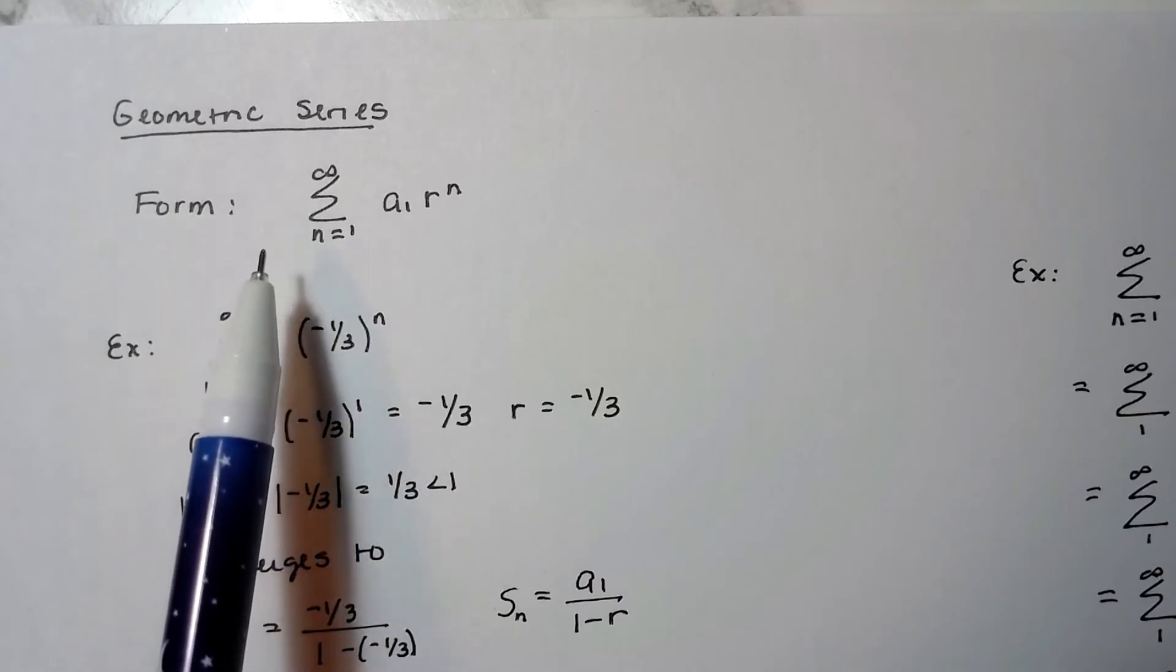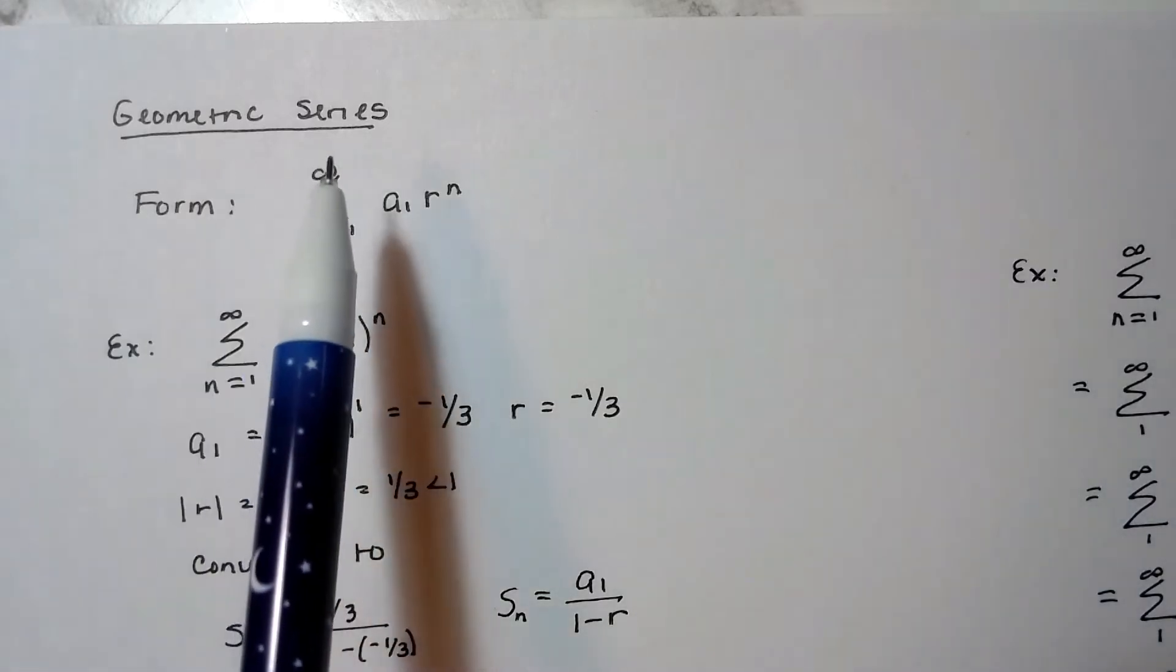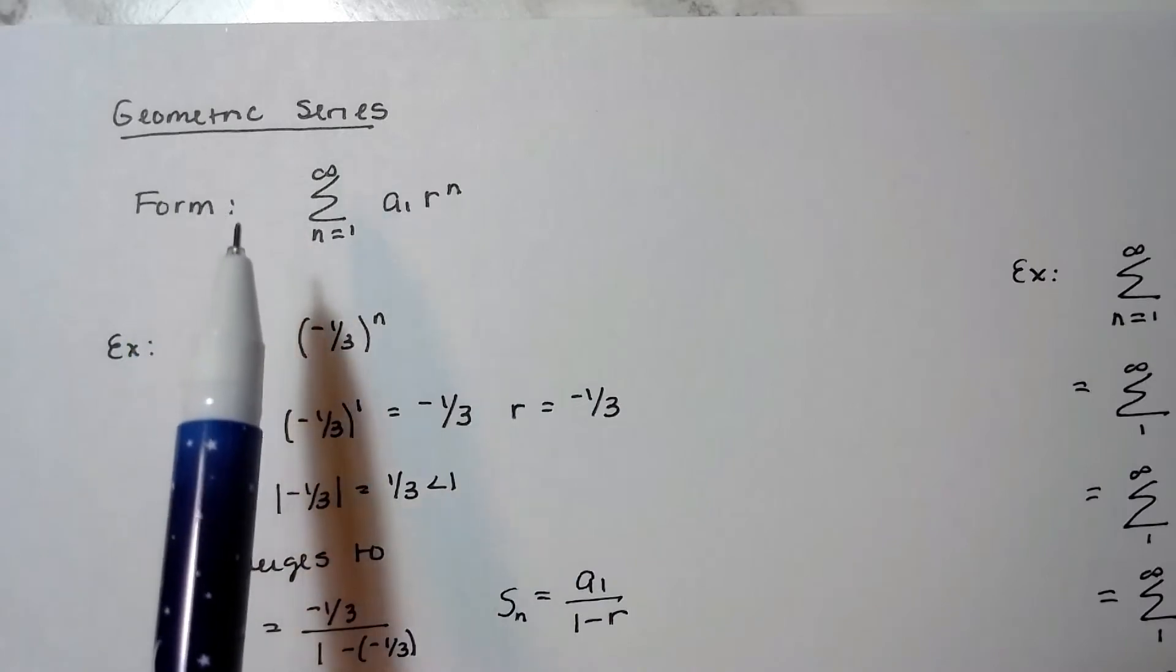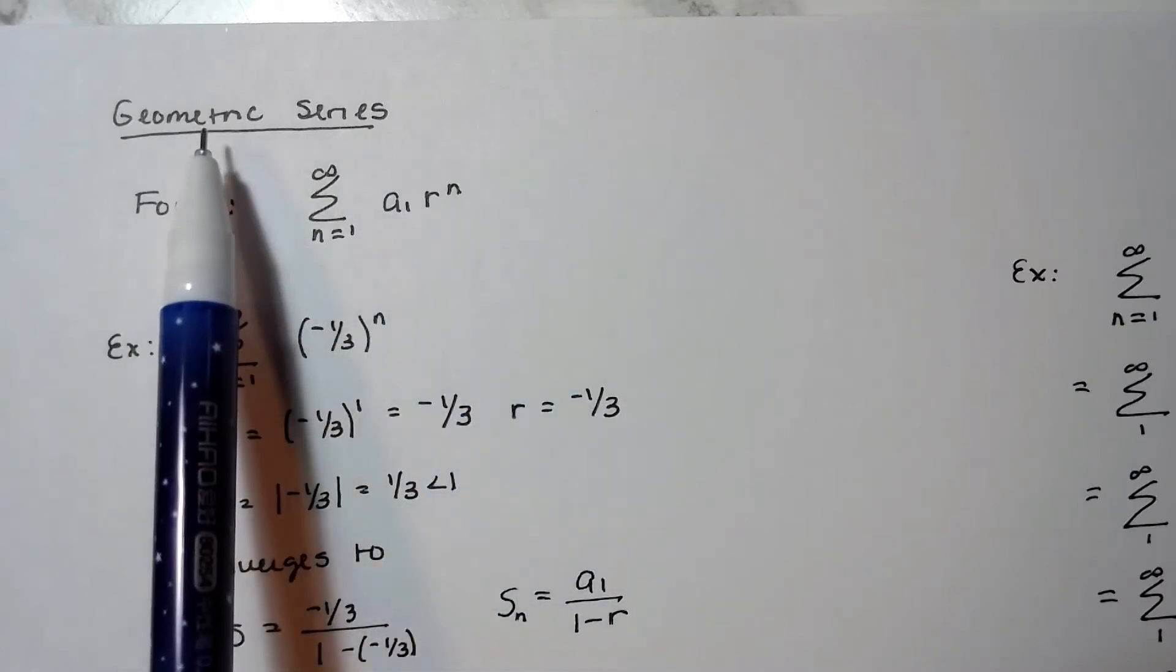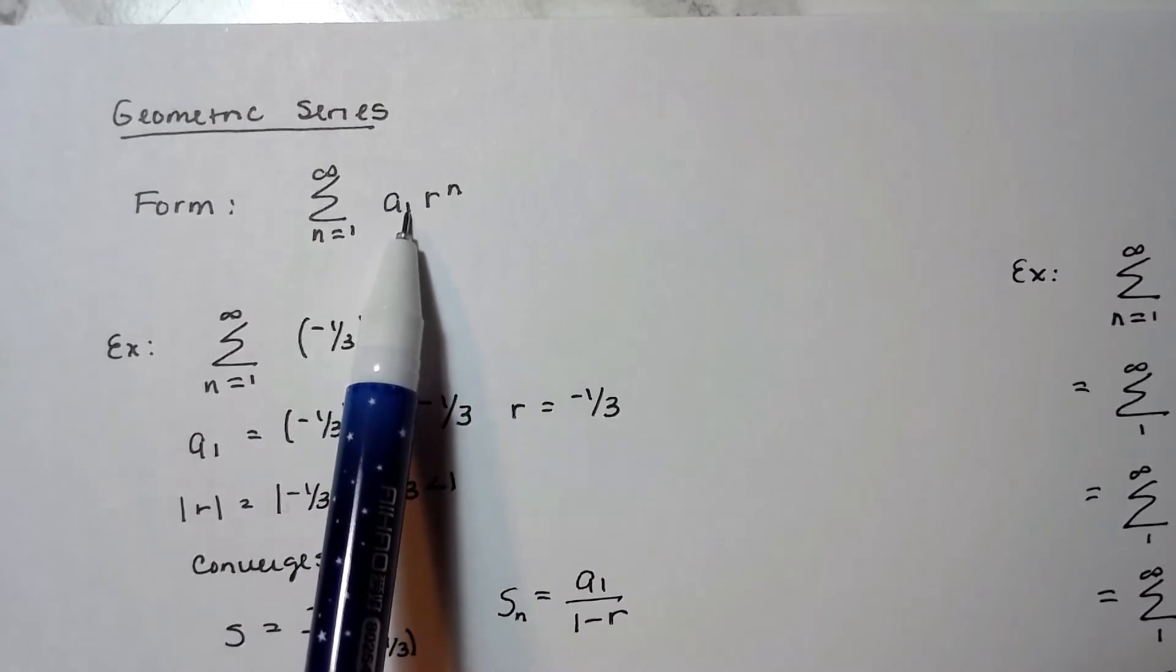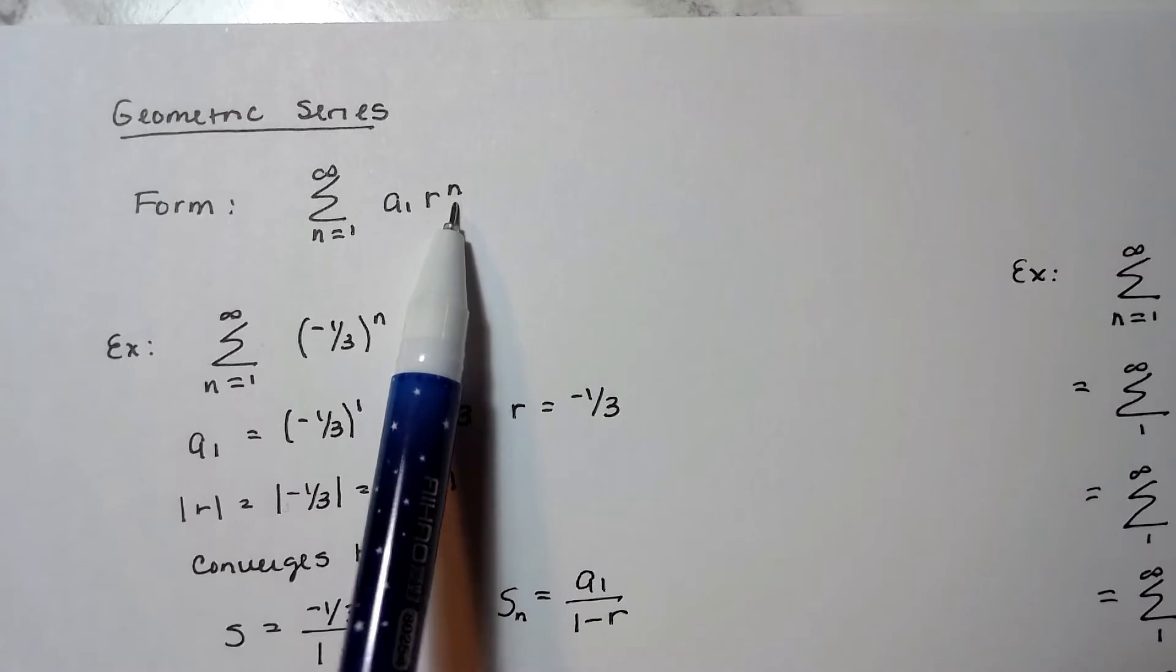So I'm just going to start here, but I will do one for each of the tests. They're just not going to be necessarily in any particular order. So a geometric series has this form, right? It has the form of a first term times some number raised to a variable.